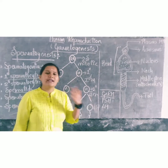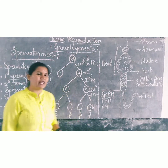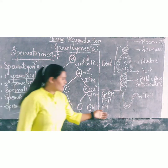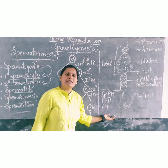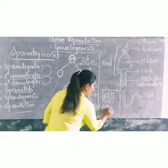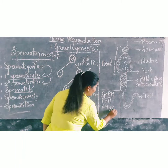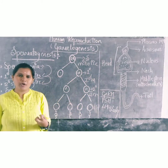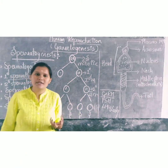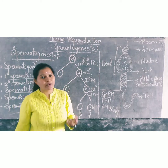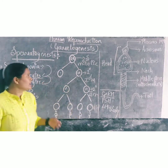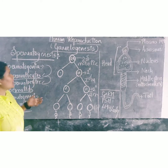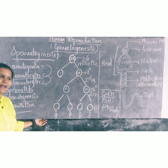These Sertoli cells secrete certain factors that help in the process of spermatogenesis. Coming to LH, that is the luteinizing hormone, which acts on the Leydig cells, helping in the secretion of androgens. Those androgen hormones help in the process of spermiogenesis. This is how spermatogenesis occurs.